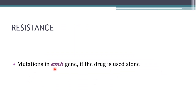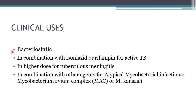Resistance to ethambutol develops due to mutations in the emb gene if the drug is used alone. Ethambutol is bacteriostatic — all other first-line drugs are bactericidal. It is used in combination with isoniazid or rifampin for active tuberculosis and in higher doses for tuberculous meningitis. It is also used in combination with other agents for atypical mycobacterial infections such as Mycobacterium avium complex.